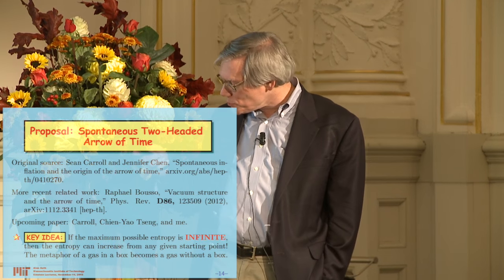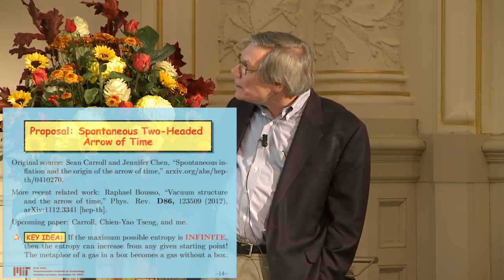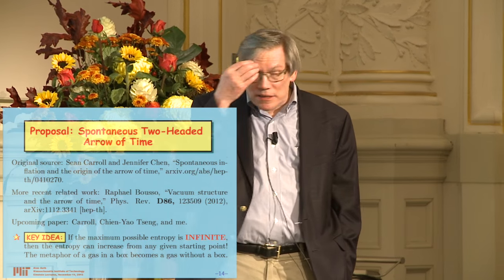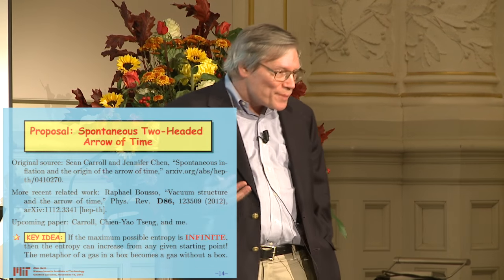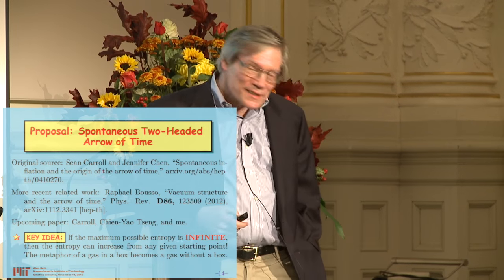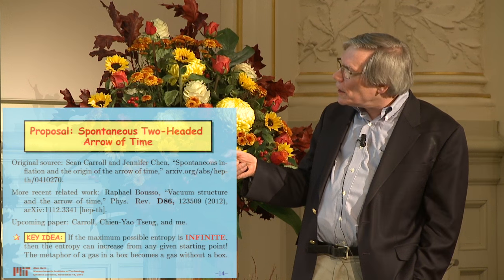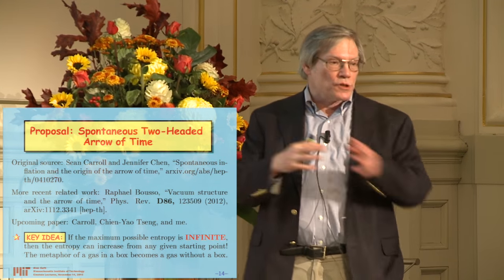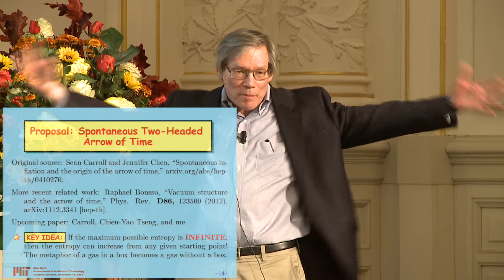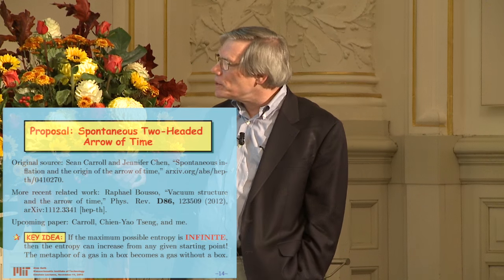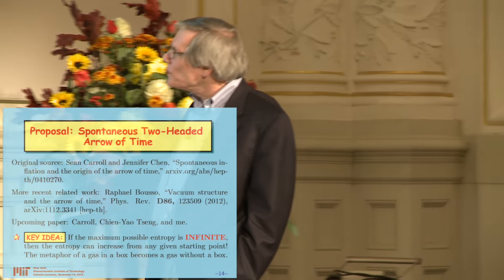If we assume the maximum possible entropy is infinite, then the entropy can increase from any starting point. The key idea is that if the maximum possible entropy is infinite, then any entropy is small — because it's small compared to the maximum, which is infinite. So the metaphor of a gas in a box gets replaced by a system which has no maximum possible entropy. The simplest such system is just a gas without a box — basically, we're going to talk about what happens when you replace the gas in a box with a gas without a box.